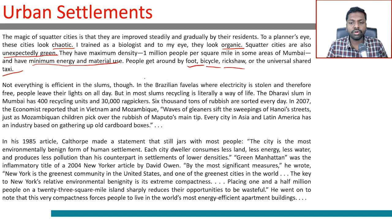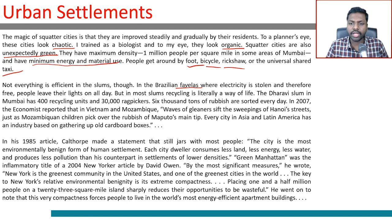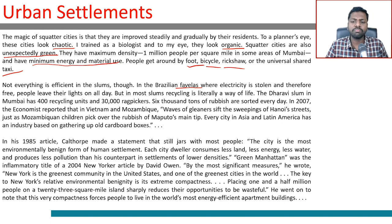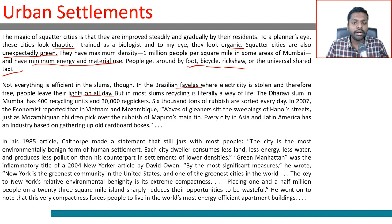Not everything is efficient in the slums though. In the Brazilian favelas — a type of settlement like a slum — the closely stacked houses are built with reusable materials including wood, where electricity is stolen and therefore free, so people leave their lights on all day.